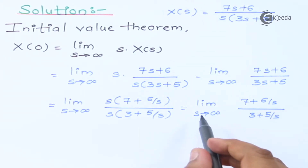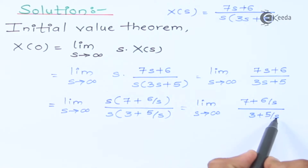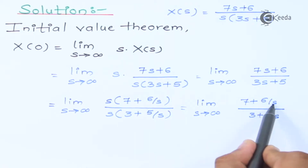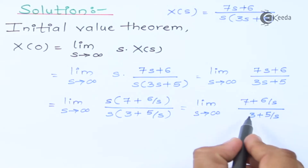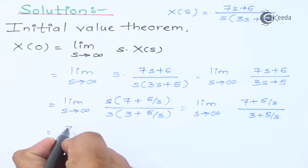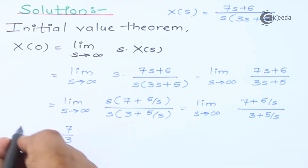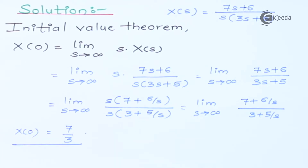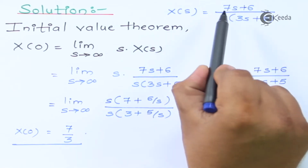Now apply the limit as s tends to infinity. Replacing s with infinity, the terms 6/infinity and 5/infinity become 0. So we are left with only 7/3. This is the initial value of X(s), which equals 7/3.